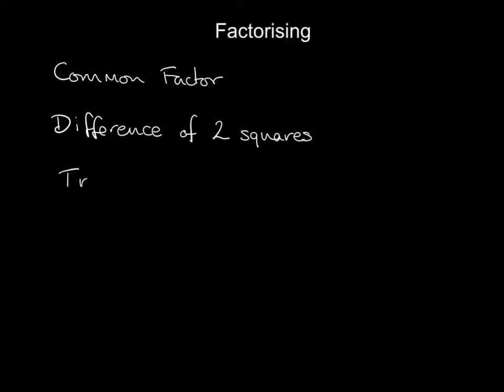When we factorize expressions, we want to change the way they look. In some cases, we have what we call a common factor. In some expressions, we want to find the difference of two squares. And the last one is where we have a trinomial. The tri part means three, which basically means we have three terms.